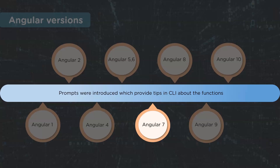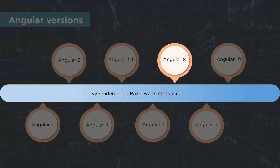Angular 7, released in October 2017, came with performance improvements and some interesting features like CLI prompts, virtual scrolling, and drag and drop. With Angular 8, released in 2019, features like Builder APIs, web worker support, and dynamic imports were introduced.